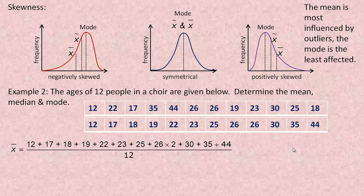To calculate the mean, we add them all up: 12 plus 17 plus 18 plus 19 plus 22. Notice there's two 26s, so you could go 26 plus 26 or 26 times 2. Then 30, 35, and 44 are the last three numbers. There are 12 numbers here, so we divide by 12. Adding all of this up gives 297, so we divide 297 by 12. The mean age is 24.75 years.